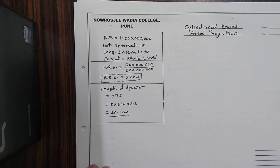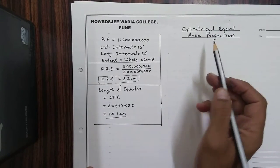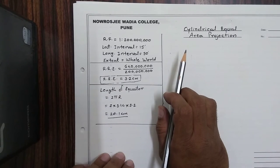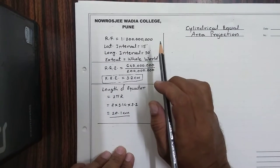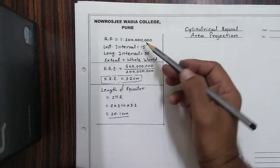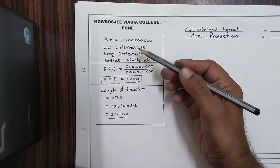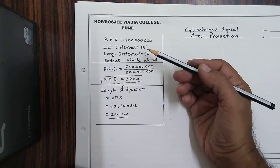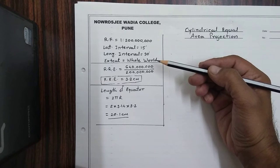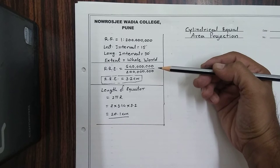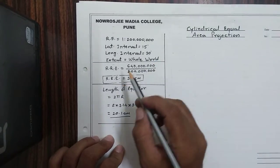Hello friends, today we are going to learn how to construct cylindrical equal area projection. The name of the projection itself says this projection preserves the property of area about any region. To construct this projection we require the following data: RF is 1:22,000,000, latitudinal interval is 15 degrees, longitudinal interval is 30 degrees, and extent is the whole world, meaning we are going to plot all latitudes and longitudes.